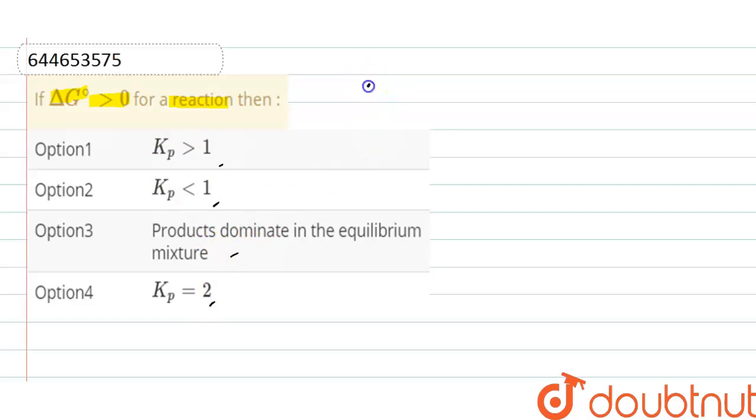The relation between ΔG°, that is Gibbs free energy change, and the equilibrium constant is ΔG° = -RT ln K, where R is the gas constant, T is the temperature, and K is